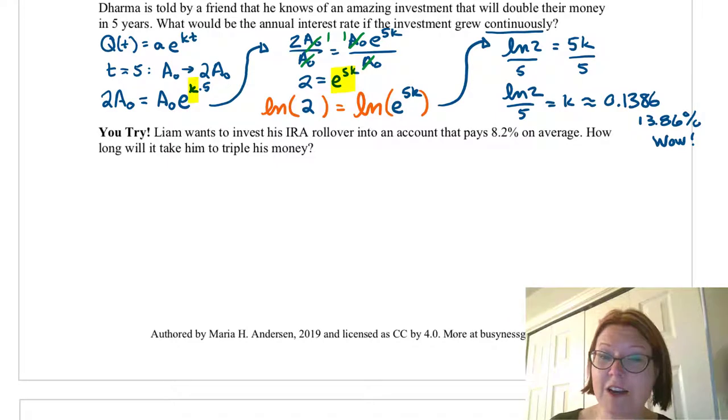Now I have a problem for you to try. Liam wants to invest his IRA rollover into an account that pays 8.2% on average. How long will it take him to triple his money? Now, before you start this, I do want to point out that I did not say here that the investment grew continuously. And so you're going to have to pay attention to what formula you would use and the fact that he's trying to triple his money. So go ahead and pause the video and see if you can make those two adjustments on your own.